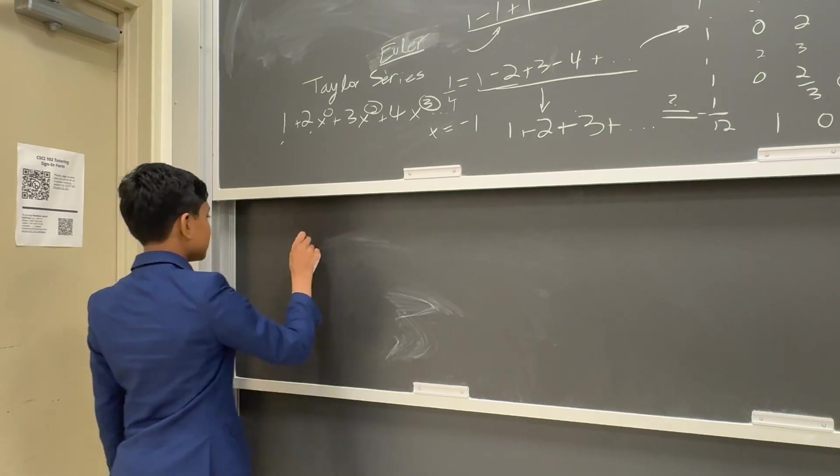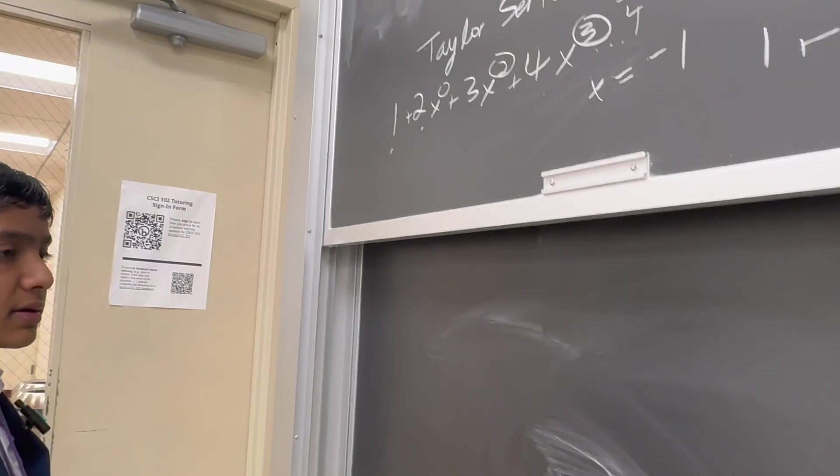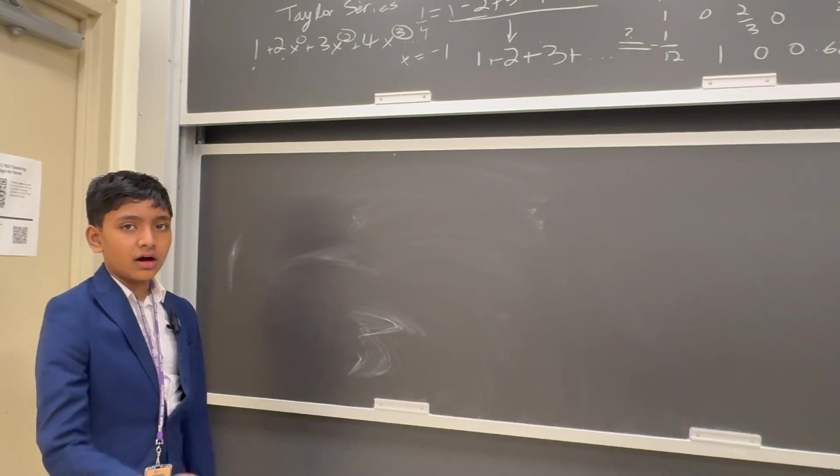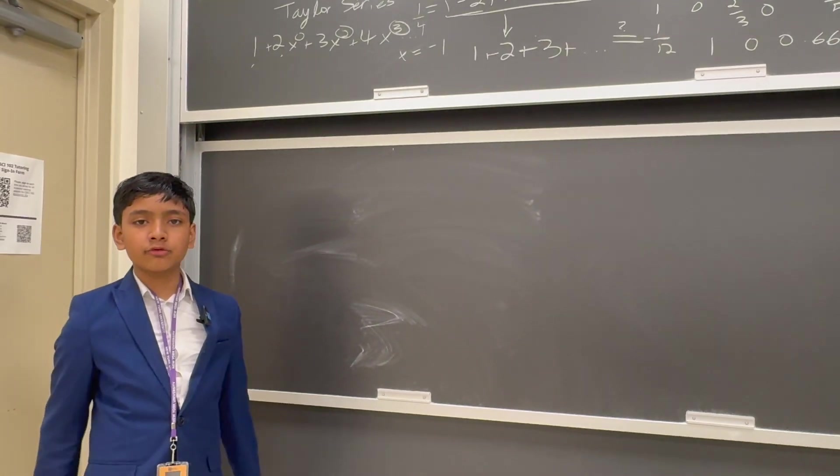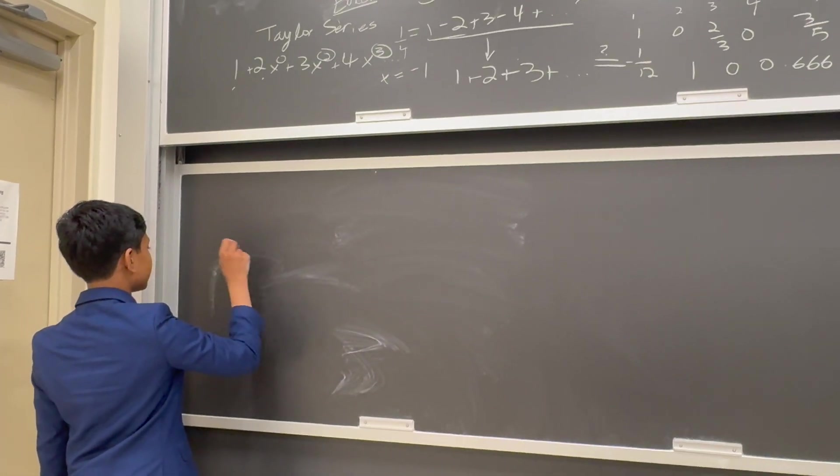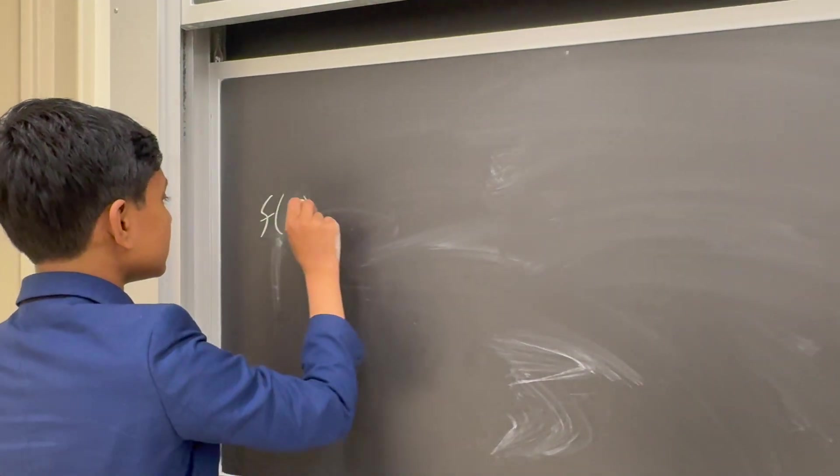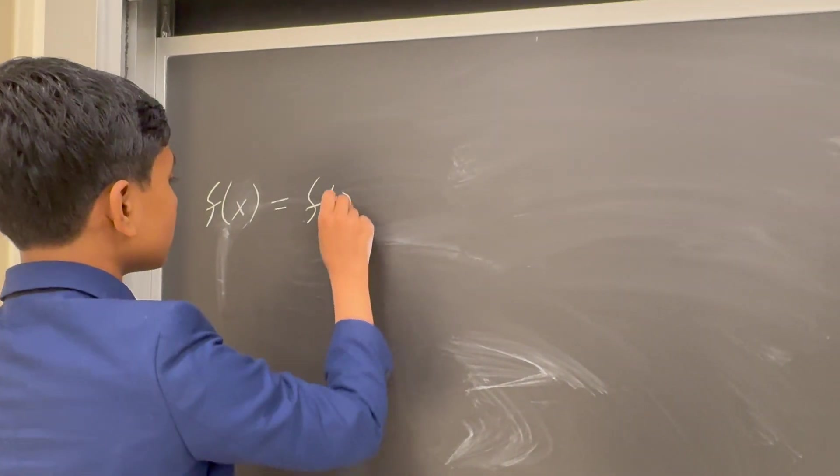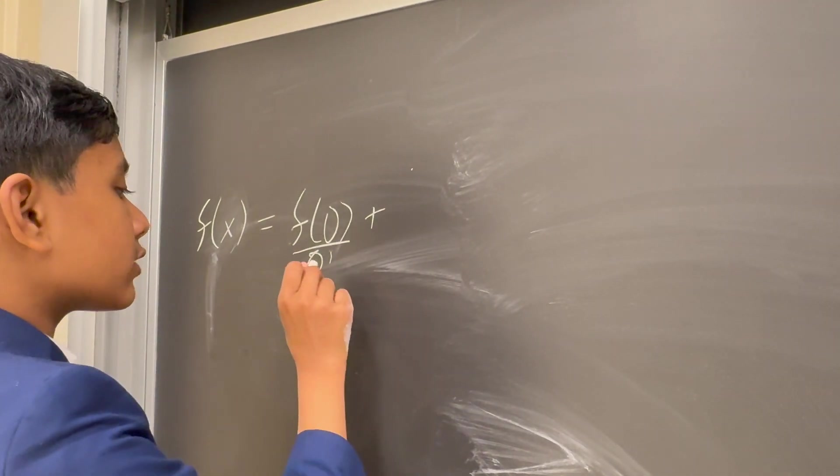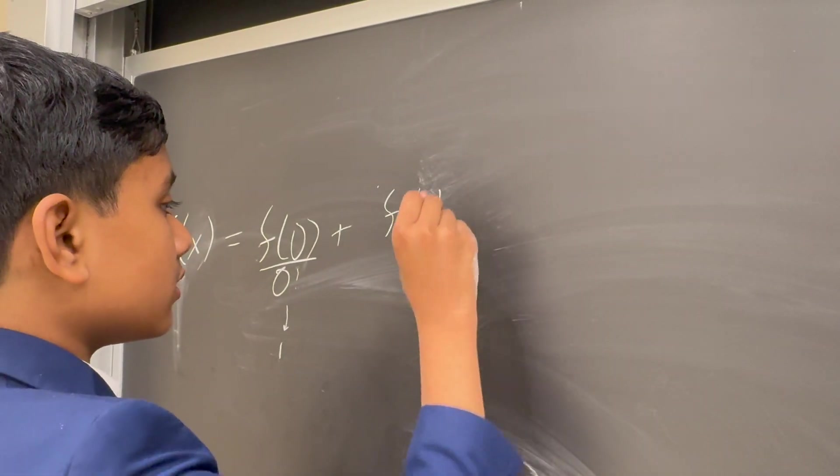So a Taylor series is essentially an infinite sum that approximates a function. We'll do a proof on it some other time. And in fact, I actually learned a proof of it during a meeting that I had at Braille University a few months ago. So what we use the Taylor series for is pretty clever. Essentially, it states that f(x) is equal to f(0) divided by 0 factorial, which is defined to be 1, plus f prime of 0...